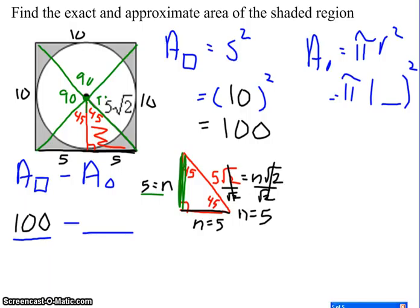This right here, we found to be 5. In my picture, that's the radius of my circle. It's the apothem of the triangle, but it's also the radius of the circle because it goes from the center to the edge of my circle. So I have a radius of 5. 5 squared is 25, so the area of my circle is 25 pi.